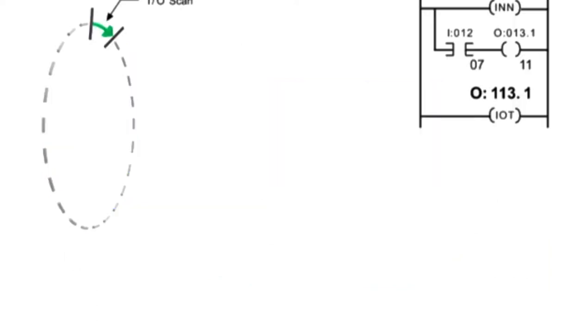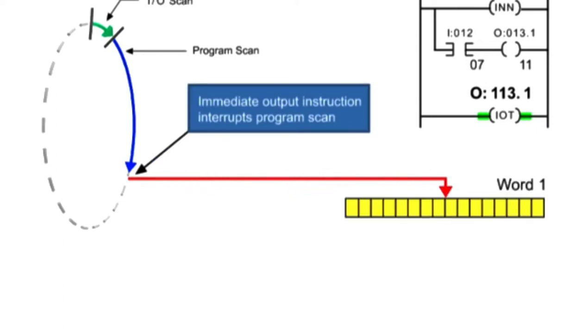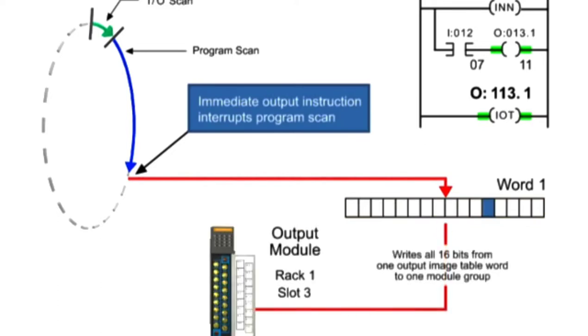The immediate output instruction operates similar to the immediate input instruction. As the scan is interrupted, the bits of the addressed word are updated and the field outputs are energized or de-energized according to the output image table. After the immediate instructions are executed, normal program scan resumes.